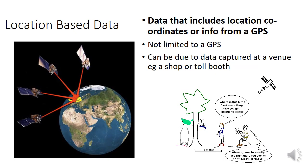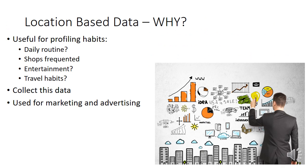Location-based data includes location coordinates or GPS information, but it's not limited to GPS. It can also come from data captured at a venue — when you're at a shop or toll booth, the location is known, and just by doing a transaction there, they are capturing data about you. They use this to profile your habits, daily routine, the shops you visit, your entertainment, and your travel habits, collecting this data for marketing and advertising.